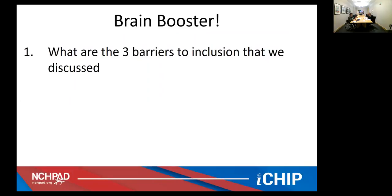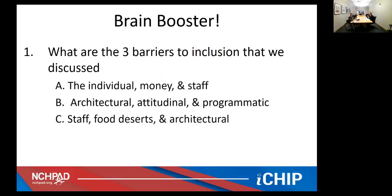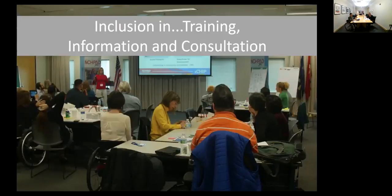Here's another brain booster to make sure you're all still with us. What are three barriers to inclusion that we discussed earlier? The answer is B — architectural, attitude, and programmatic barriers. While there are definitely other barriers, these were the three we talked about today. Moving on to inclusion in training, information, and consultation — this is something we can provide to your organization, or it's available through our e-learning platforms. Training and information consultation is a large part of what we do.